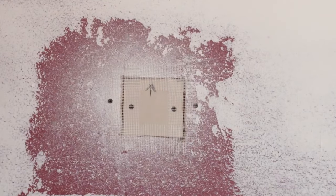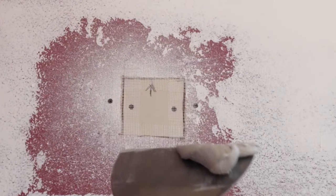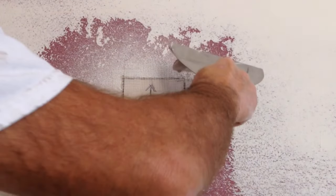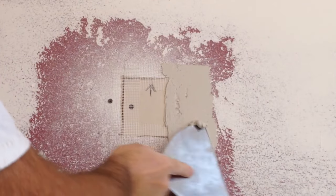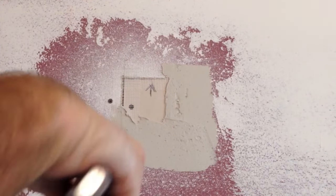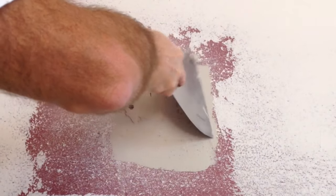I've got the 20 minute easy sand joint compound already mixed up. What I like to do is just place the mud or joint compound on one side of the knife. That way you're not putting too much on at one time.